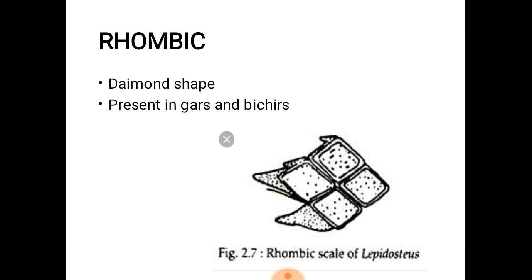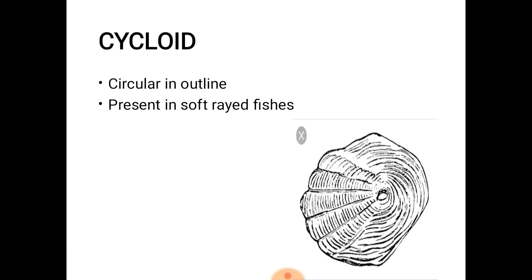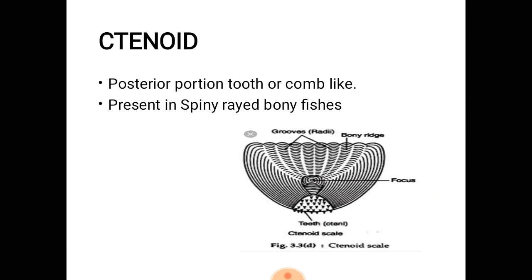Rhombic scales are also known as kite-shaped and they are present in gars and bichirs. Cycloid scales are circular in outline and present in soft-rayed bony fishes. Tenoid scales have the posterior portion tooth-like or comb-like and they are present in spiny-rayed bony fishes.